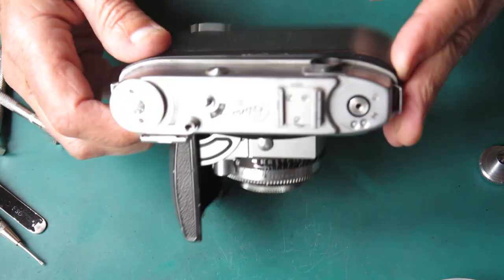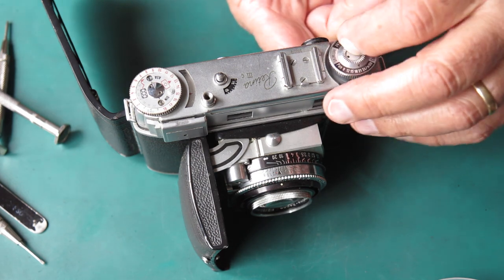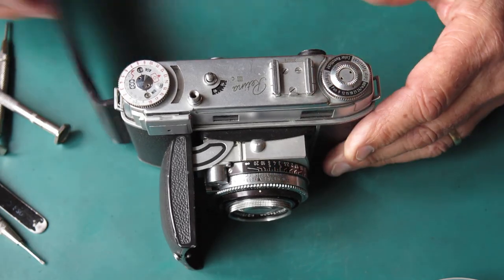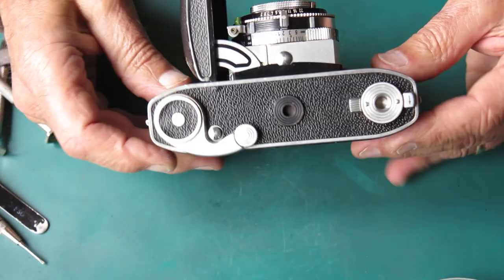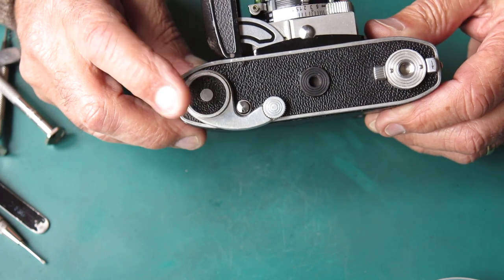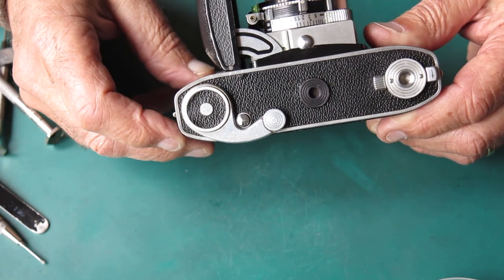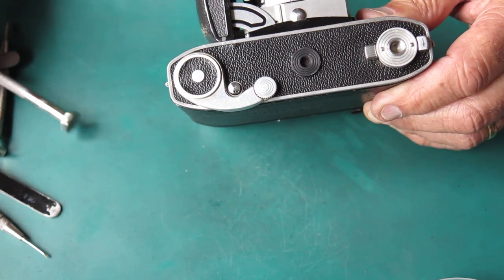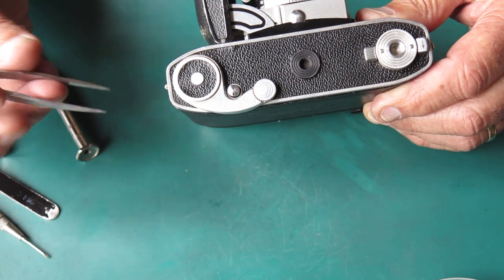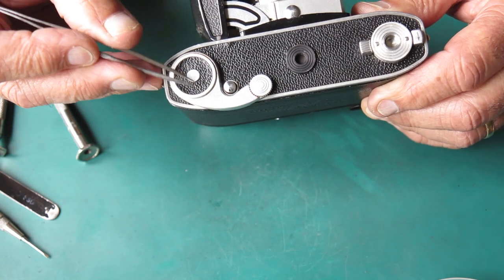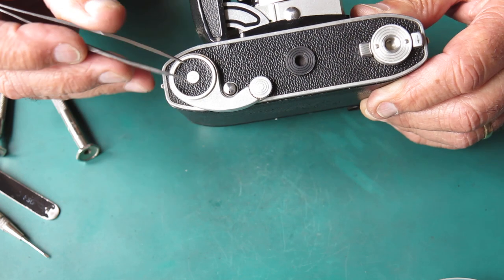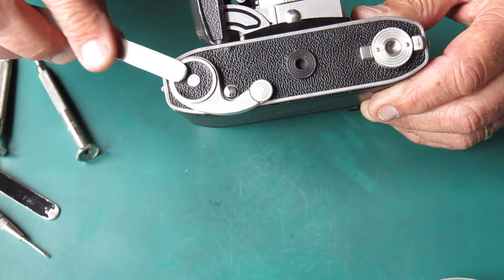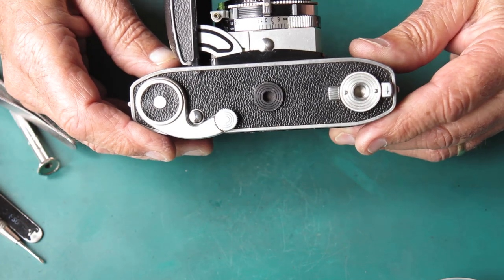I'll put the rewind knob back on. Here's something - the early Retina 3Cs, look at that - that's the advance knob. They had a shiny raised boss in the middle which is basically just part of the advance knob. Instead of machining out the whole of this and having a disc of leather, they machined out a ring and had a ring of leather.